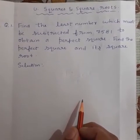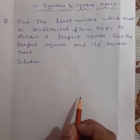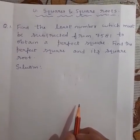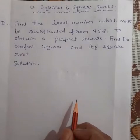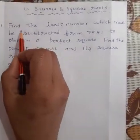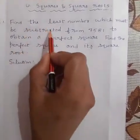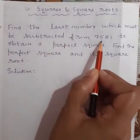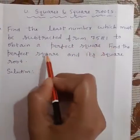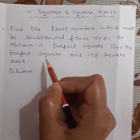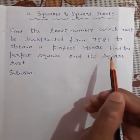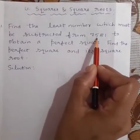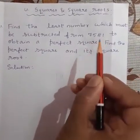Hello students. In the last video we learned to find the square root by long division method. Let's solve some questions based on long division method. Find the least number which must be subtracted from 7,581 to obtain a perfect square. Find the perfect square and its square root. Let's try to find the square root of 7,581 by long division method.